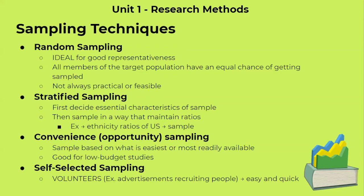The second type of sampling is stratified sampling. Here, we first decide the essential characteristics of the sample. So if we want to talk about ethnicity in the US, we would find the ratios — this many percentage of this ethnicity, this many percentage of that ethnicity — and then make sure that our sample fits those ratios. So if 20% is one ethnicity and 40% is another, our sample will also have to match that in order to be considered stratified sampling.